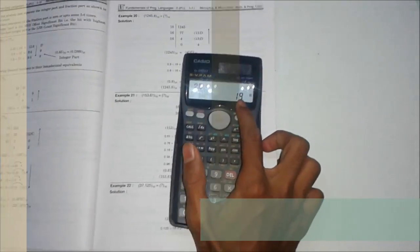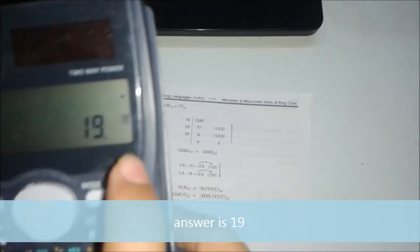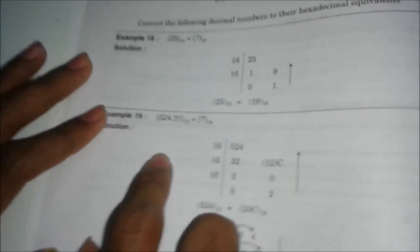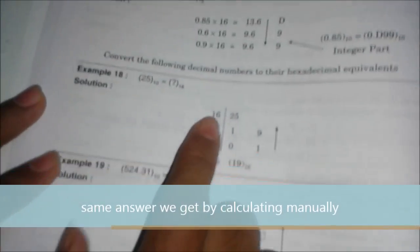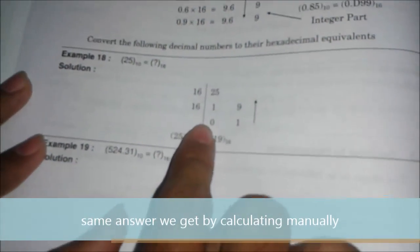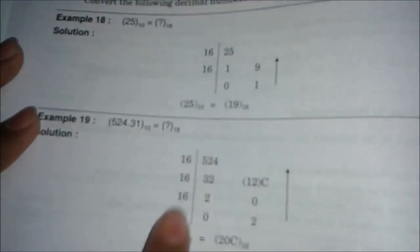It's converting into its equivalent hexadecimal form, that is 19. You can see H written over here. This matches the manual calculation: 25 divided by 16 equals 1 remainder 9, and then 1 divided by 16 equals 0 remainder 1, which gives us 19.